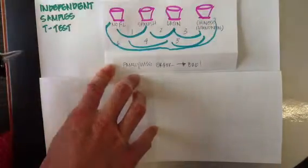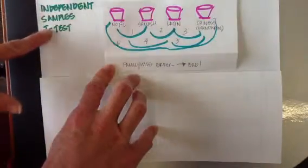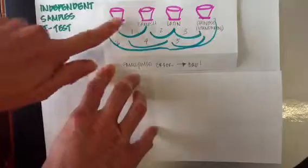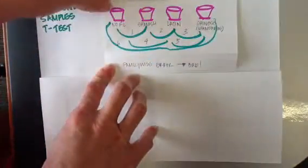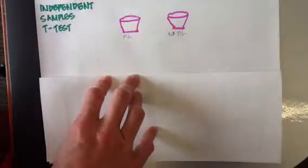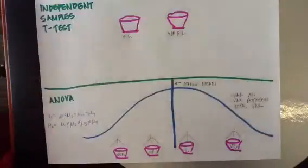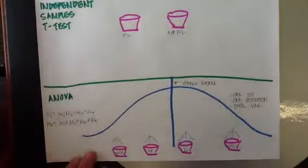So for this reason, repeated use of the independent samples t-test when you have more than two samples is inappropriate. And instead, what we want to do is use ANOVA, or Analysis of Variance.